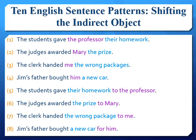Sentences one through four have the indirect object preceding the direct object, such as the proper noun 'Mary' before the noun phrase 'the prize.' Conversely, sentences five through eight shift the indirect objects after the direct object, such as the direct object 'the prize' followed by the indirect object 'to Mary.'